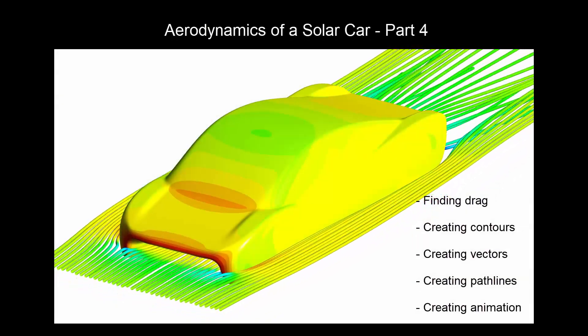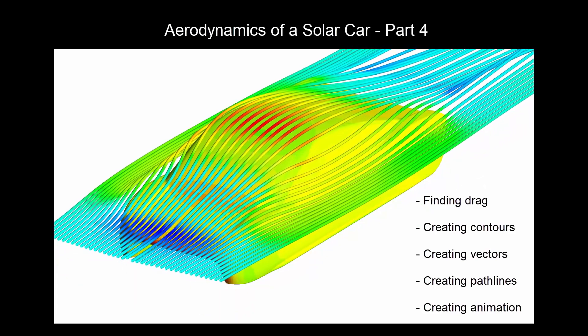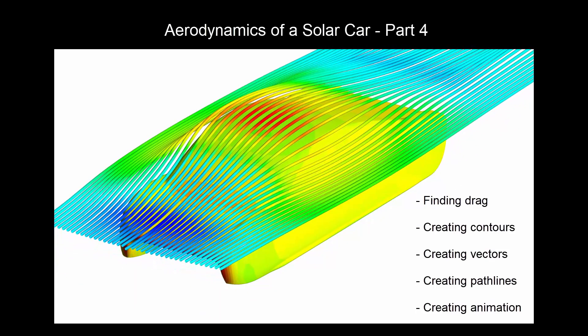Part 4 will look at post-processing of the results. This will cover creating contours, vectors, pathlines and animation to showcase the flow around the car.